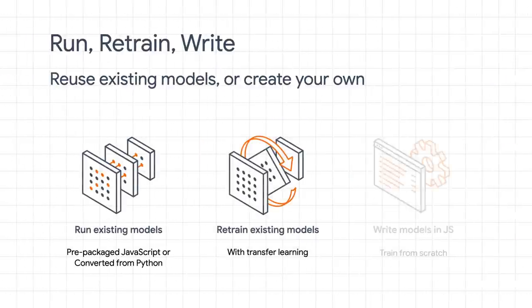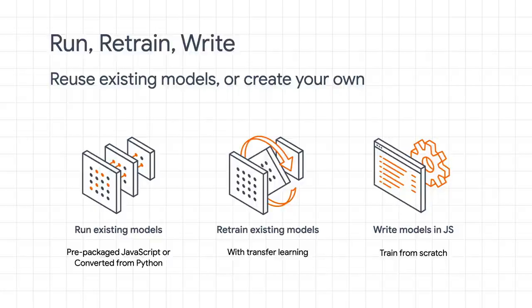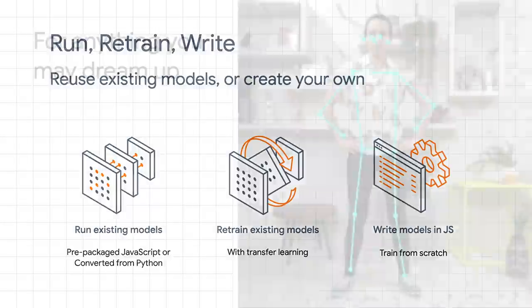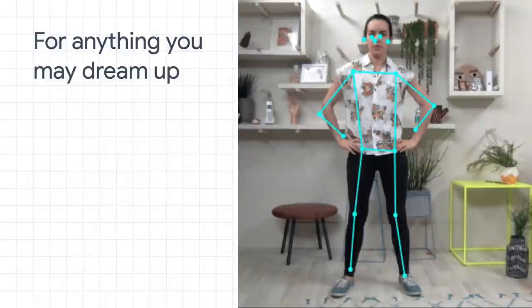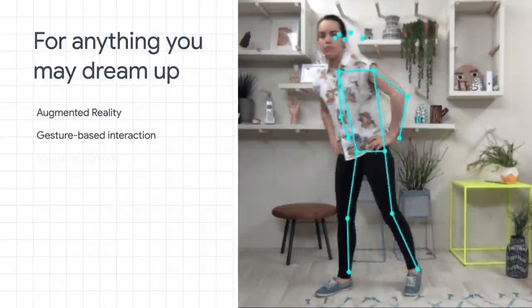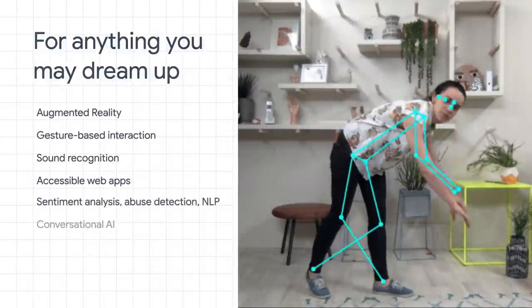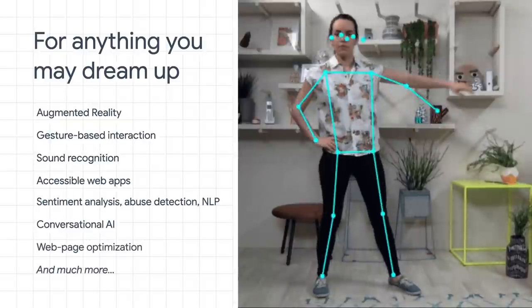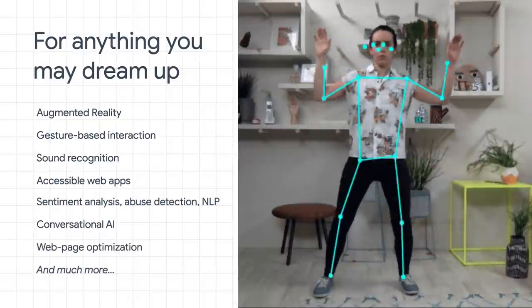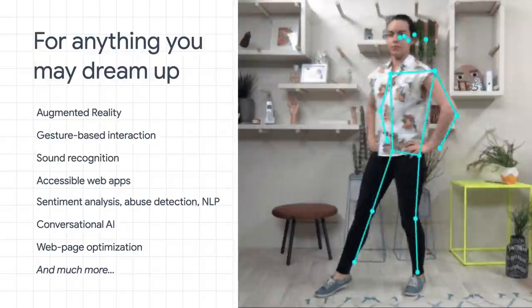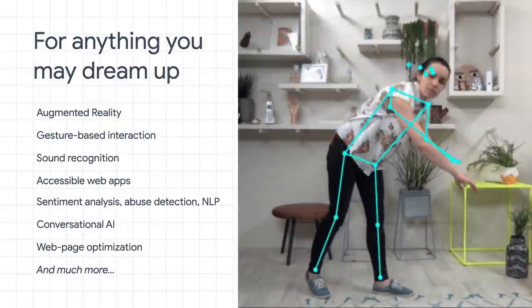With TensorFlow.js, you can run or retrain via transfer learning or write your own models completely from a blank canvas, just like you can do in Python with the original TensorFlow, but in JavaScript. And with this, you can use it for anything you might dream up — things like sound recognition, gesture-based interaction, sentiment analysis, conversational AI, and much, much more.